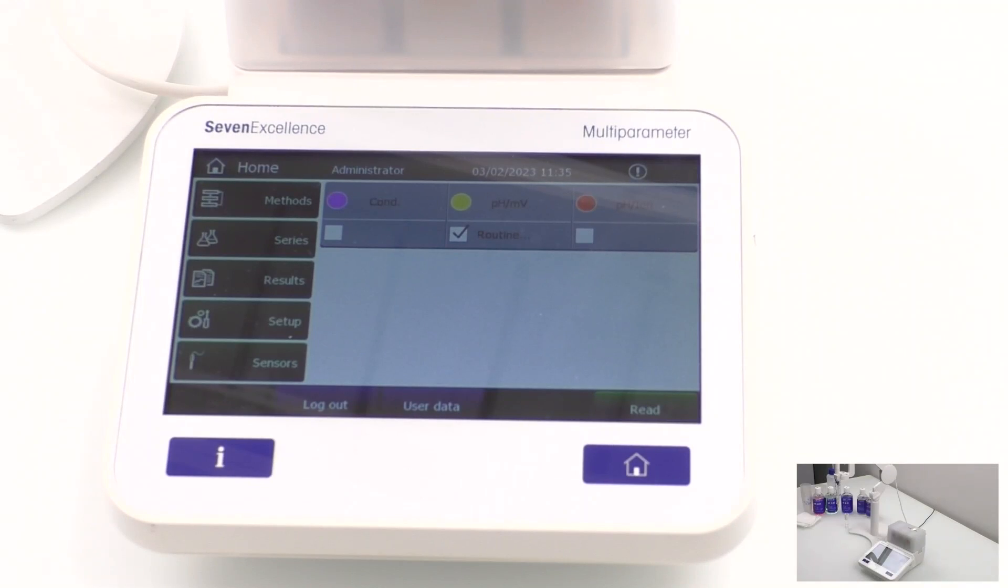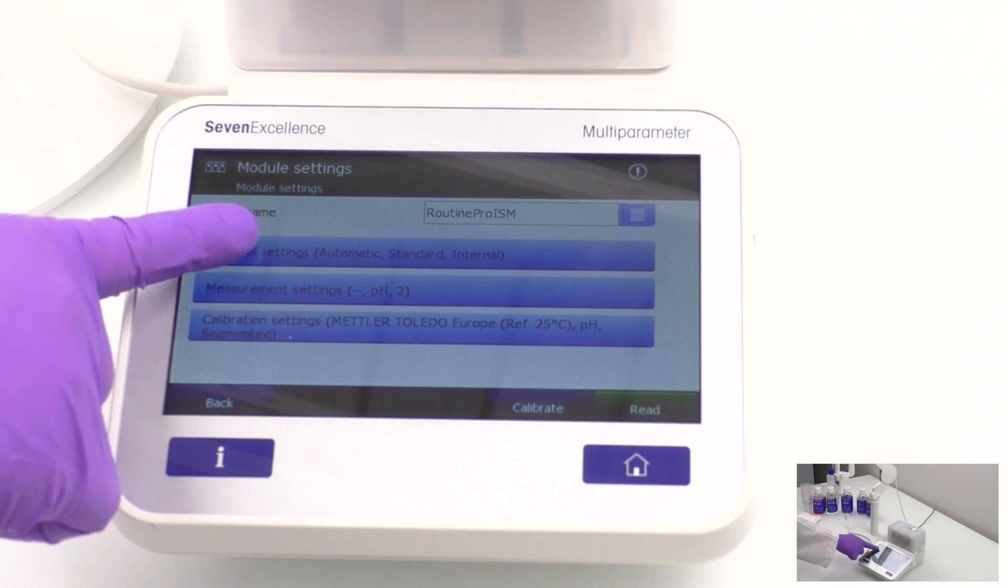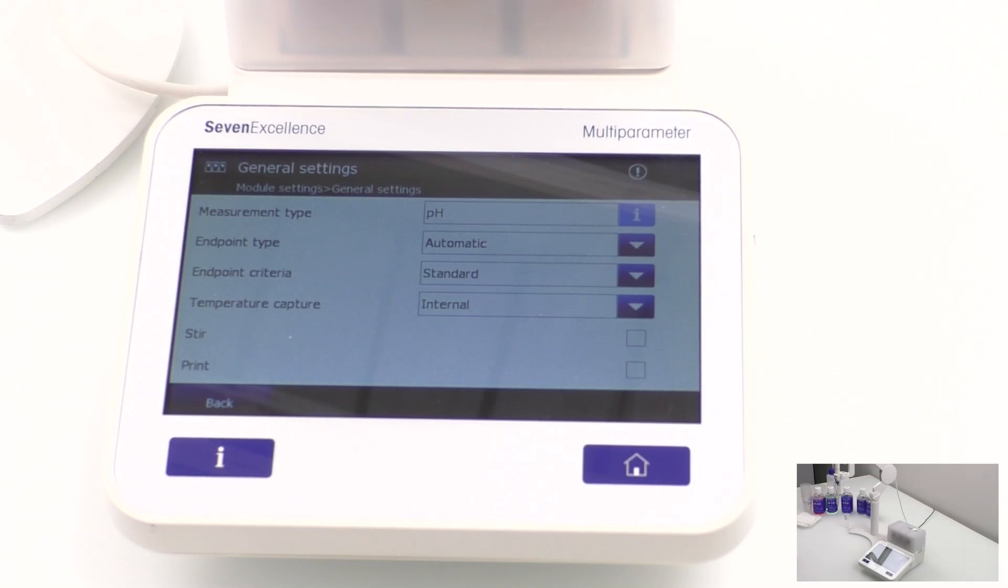To set the meter ready for the standard buffers, click on the pH module and select General Settings. Keep the endpoint type as Automatic and the endpoint criteria as Standard. Also, keep the temperature capture default Internal, as the sensor already contains the temperature probe. Once you're finished, click back.